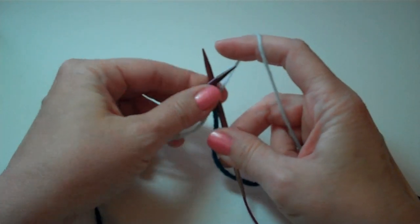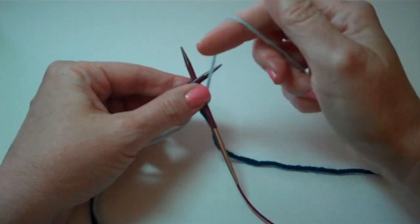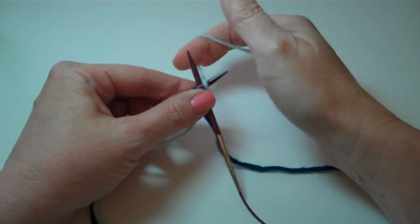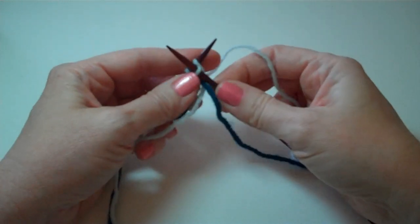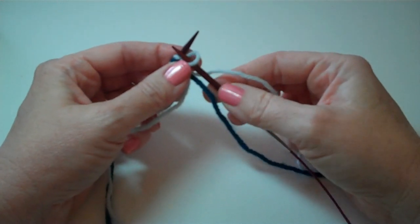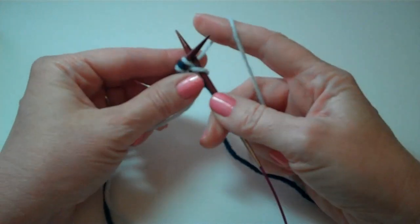We're going to follow the same pattern that we followed on the other one. Our yarn is going to come over the top of the left hand needle around the right and we're going to just pull that through. Pull up on that loop to adjust your tension, retract your right hand needle and stick it back in the front door.